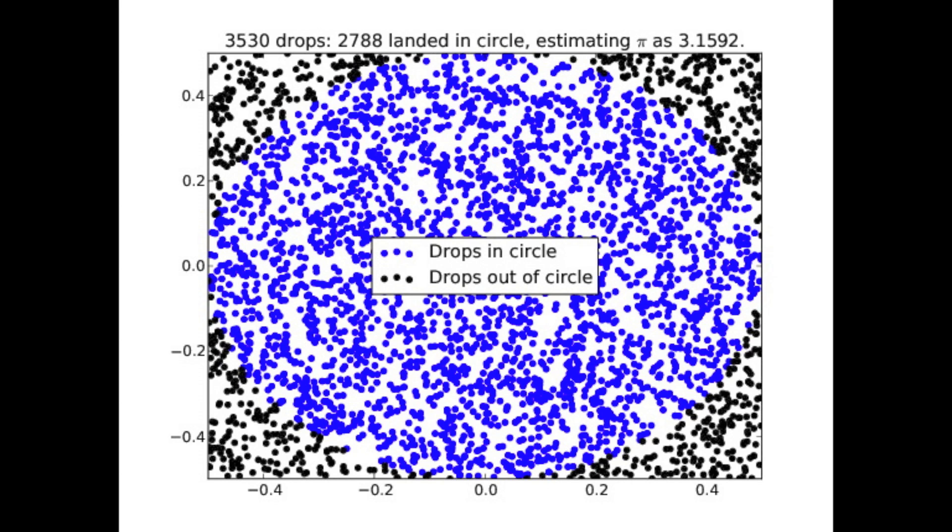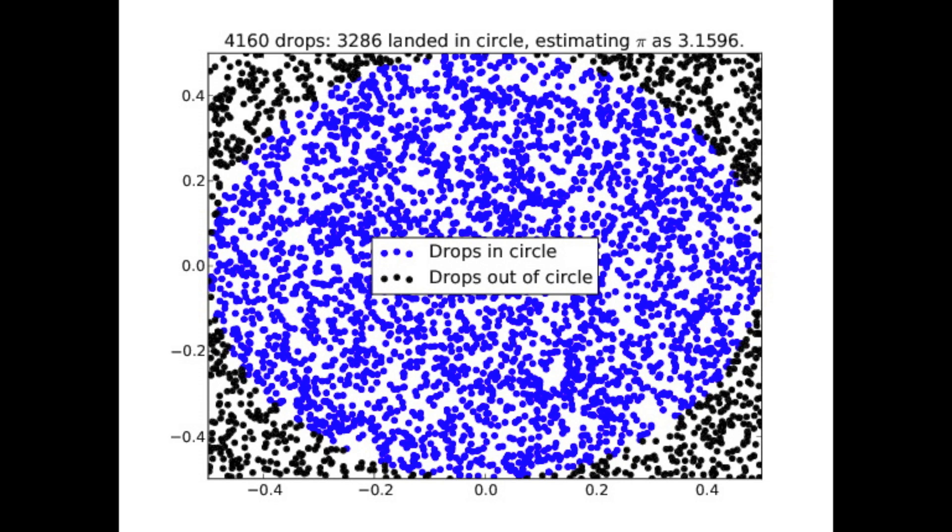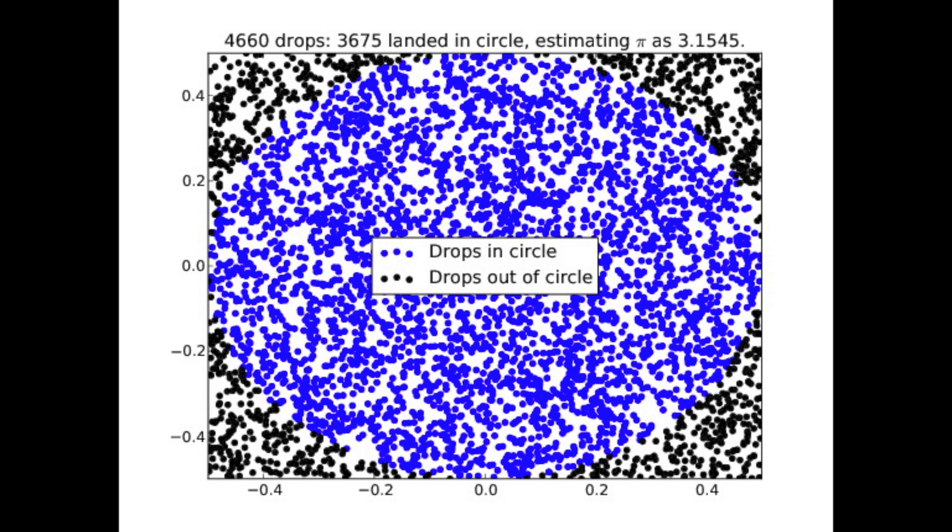And so the estimate of pi in the top right there is just at every point just taking that four times the ratio of the number of drops in the circle over the total number of drops.